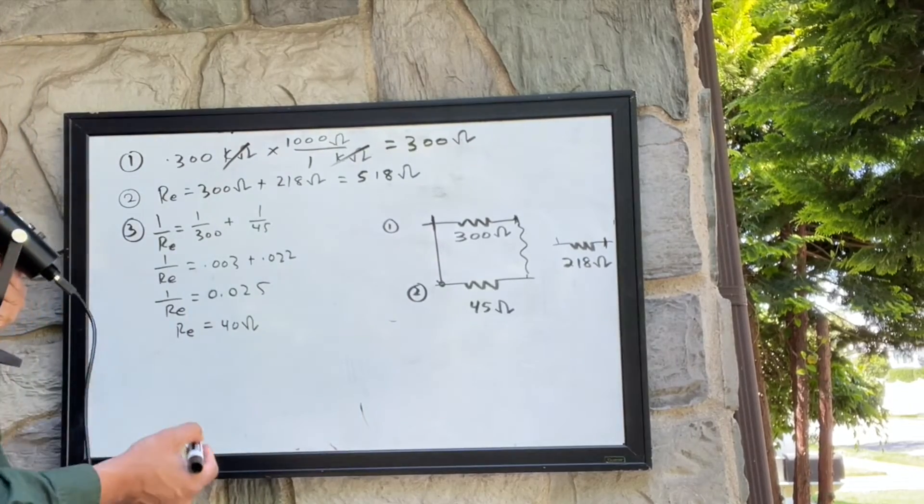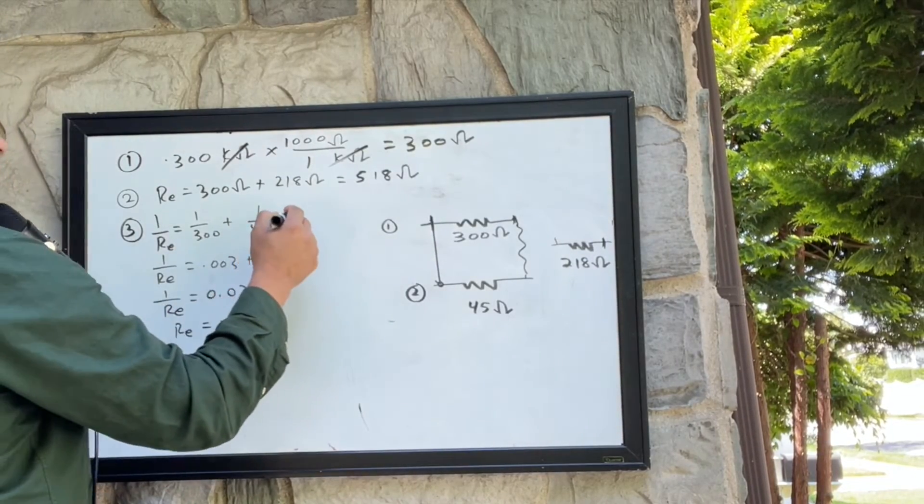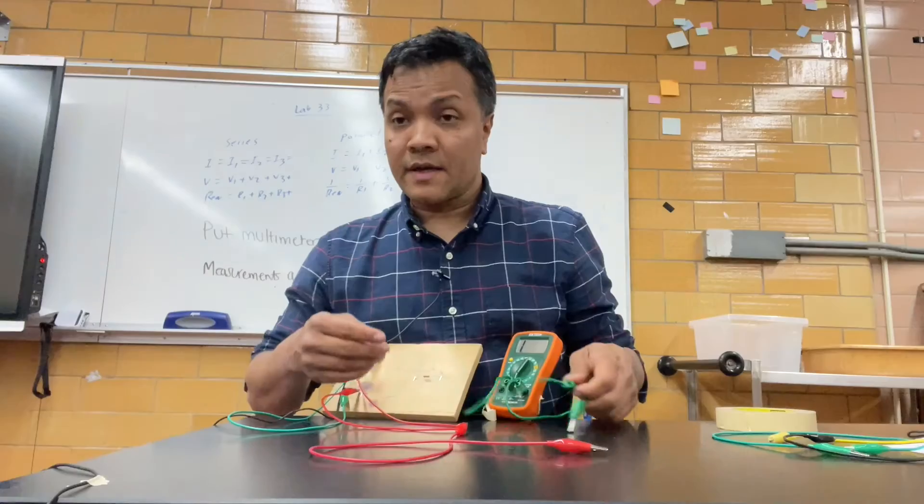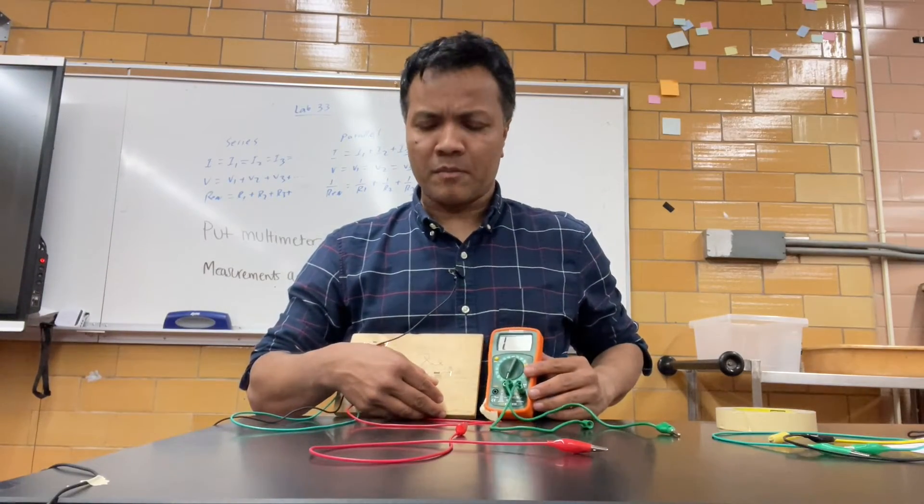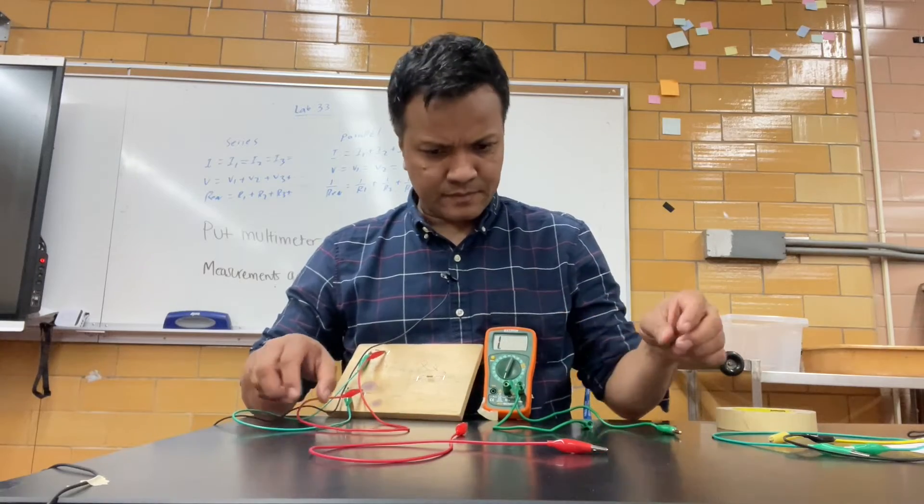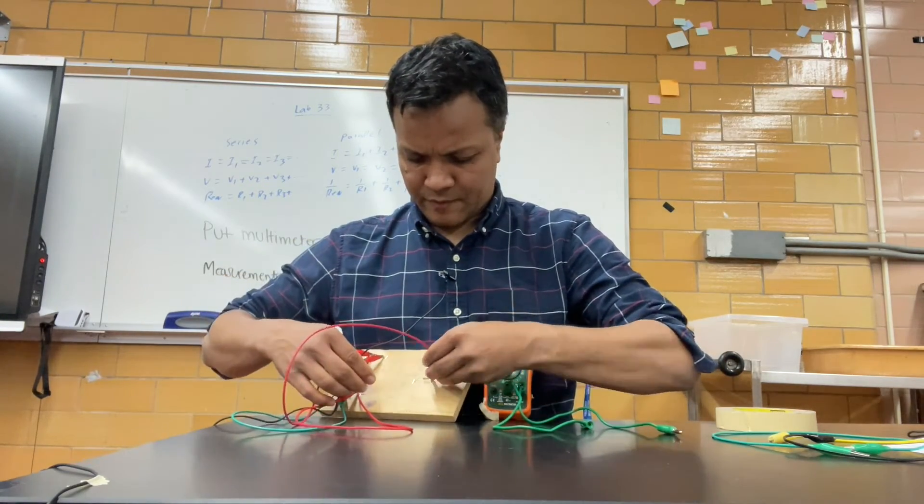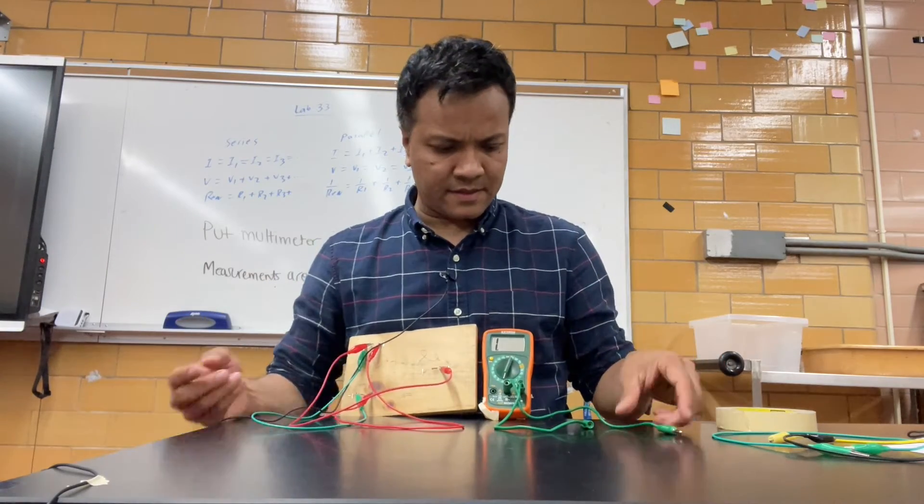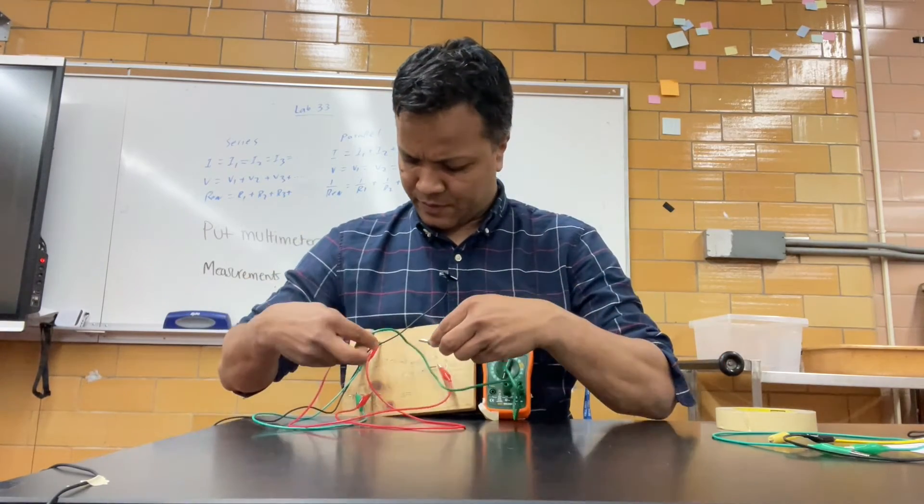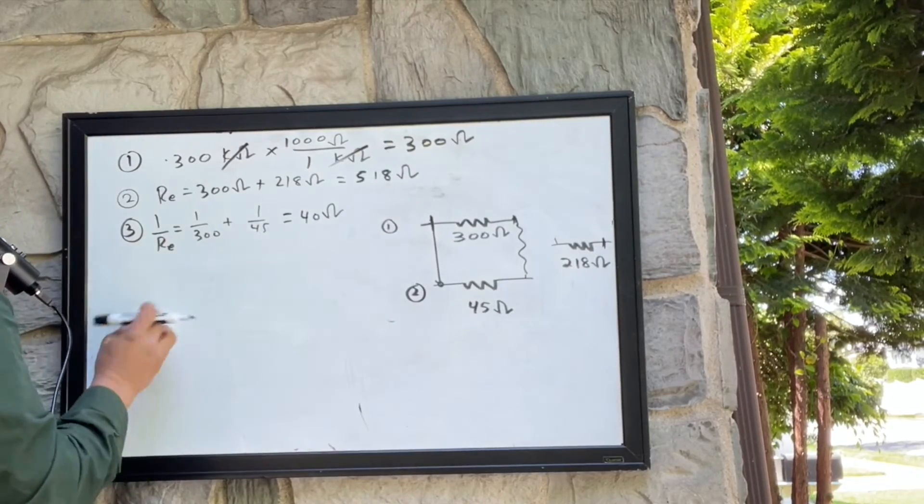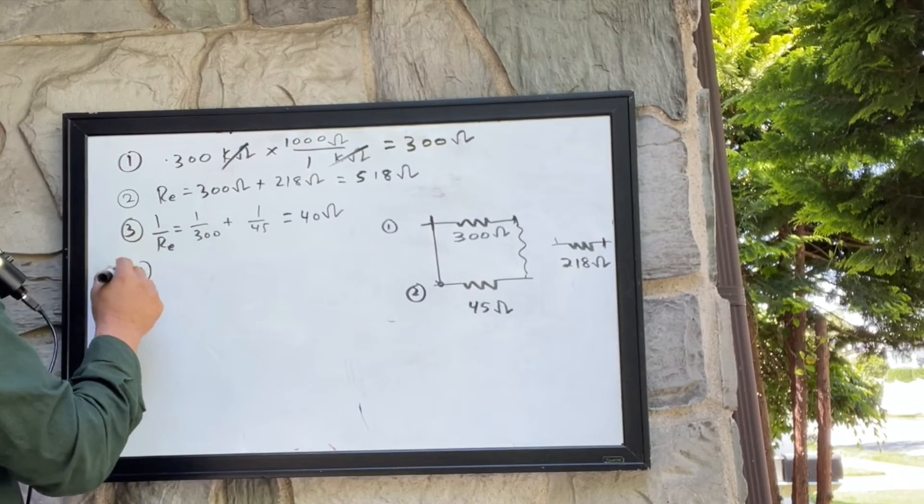Okay number four, so this one is 45, 40, 40 ohms. Now I'm gonna make a complex circuit by attaching this one with this. Now this is a complex circuit. Now let's see how much it reads.